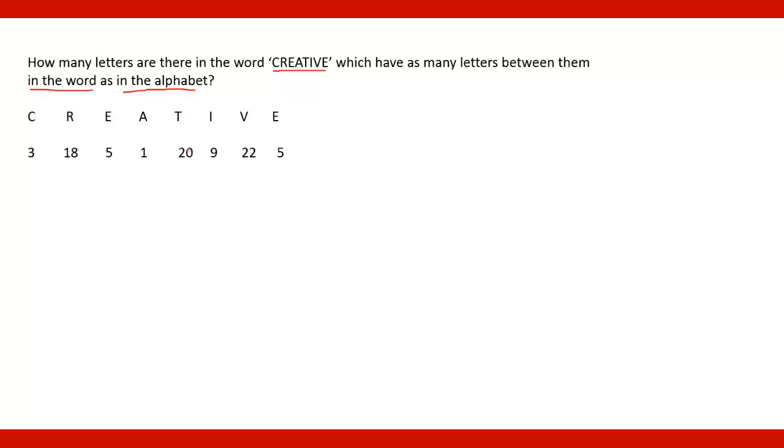A ranks 1, T ranks 20, I ranks 9, V 22 and E 5. If you know the ranking of these letters of the alphabet you can easily find it.